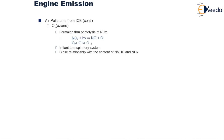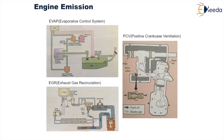Then we have ozone. The formation of ozone takes place through the photolysis of oxides of nitrogen, as shown by the chemical equation here. This ozone is an irritant to the respiratory system. Thank you very much.